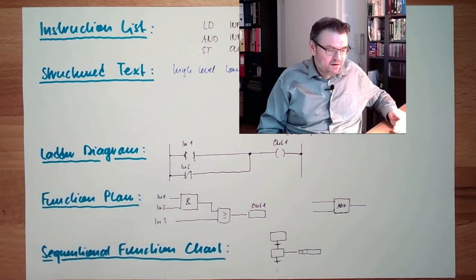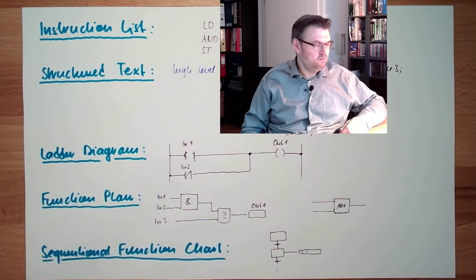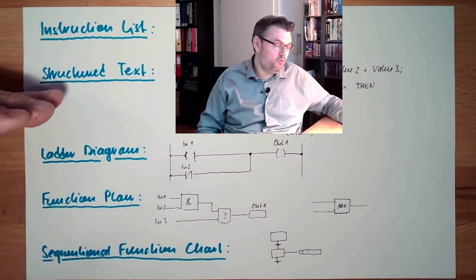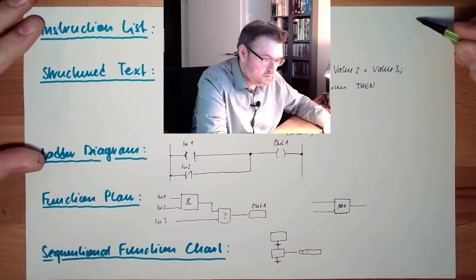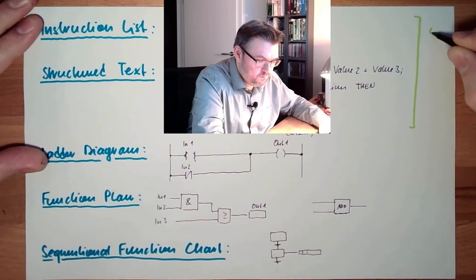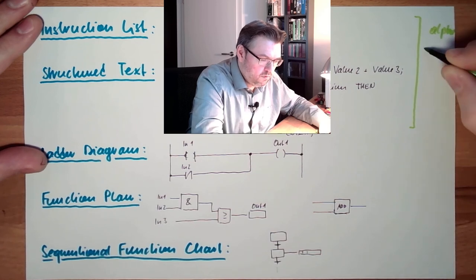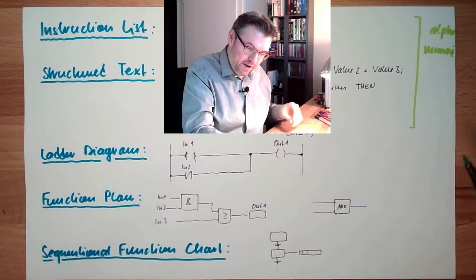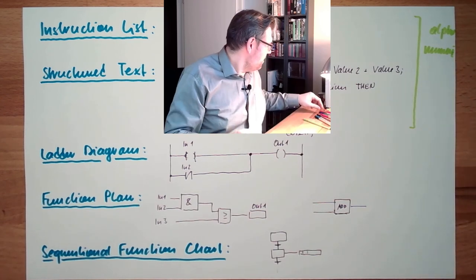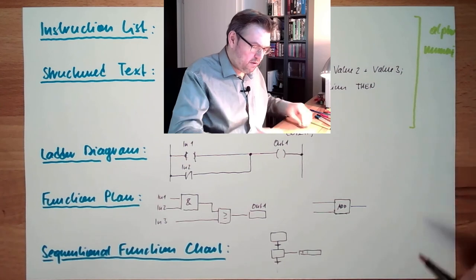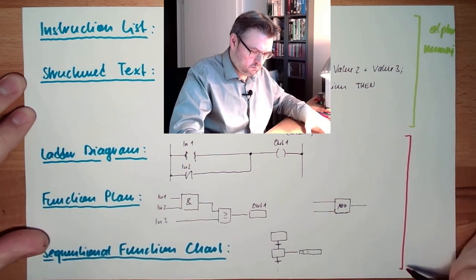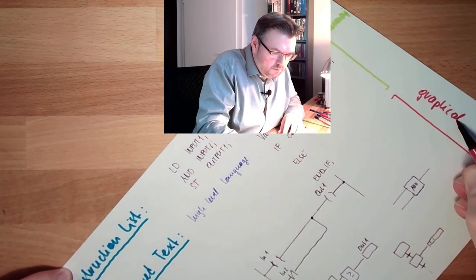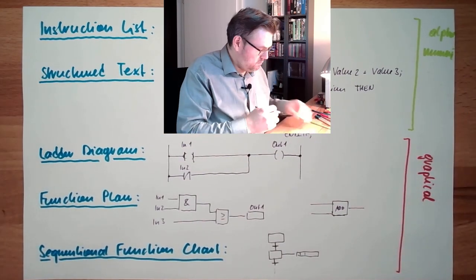So these are the five standardized languages: Instruction List basic, marked as outdated; Structured Text real programming language; these are alphanumeric. Alphanumeric, you can read it right, alphanumeric. And these here are graphical.